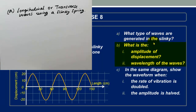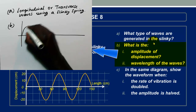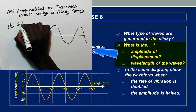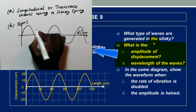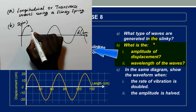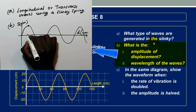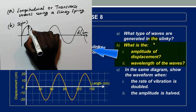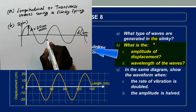Now let us look at part B, where we are asked what is the amplitude of the displacement. Amplitude is defined as the maximum displacement of the disturbance or the maximum displacement of the particle from its rest position. Looking at the graph given in the question, the maximum displacement from the rest position is the amplitude, which is 20 centimeters.